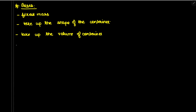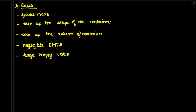Gases have weak or negligible intermolecular force of attraction, and particles have large intermolecular spaces. We use better wording and say they have a large empty volume between particles. The volume of a gas consists of the volume of the gaseous particles plus the empty volume between them.